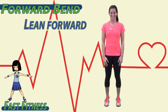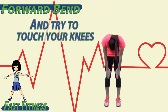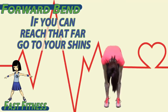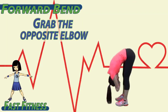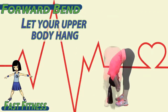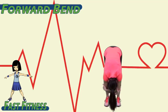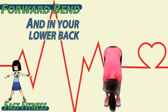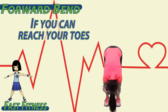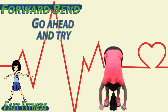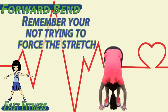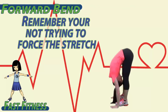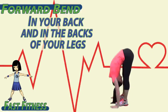To begin, lean forward and try to touch your knees. If you can reach that far, go to your shins. If you can reach farther, grab the opposite knee and let your upper body hang. Feel the stretch in the back of your legs and in your lower back. If you can reach your toes or even the ground, go ahead and try. Remember, you're not trying to force the stretch — just feel it in your back and in the backs of your legs.